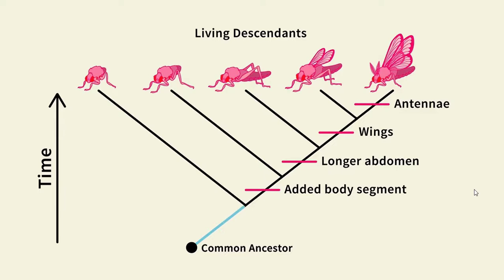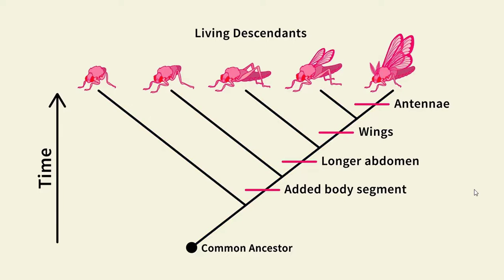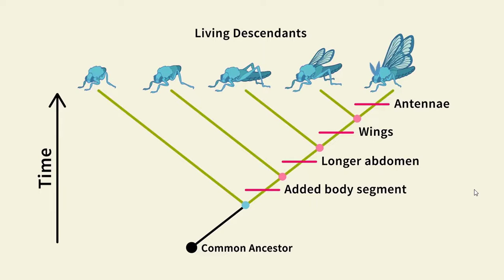Remember that the branches represent lineages of ancestors. The branch points, or nodes, represent common ancestors — or more specifically, the most recent ancestor that is common to all the branches beyond it. So this common ancestor is shared by all of the creatures on the tree, and this common ancestor is shared only by the ones with wings.